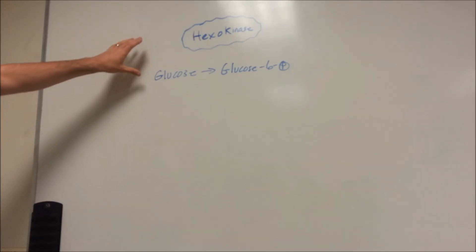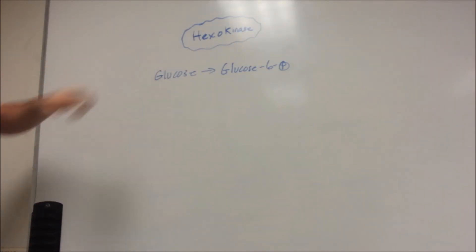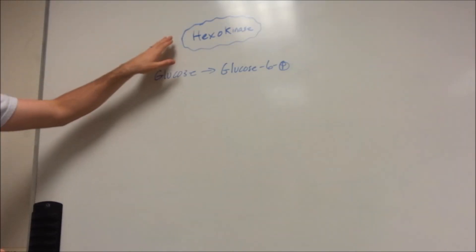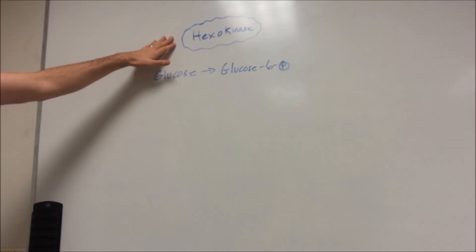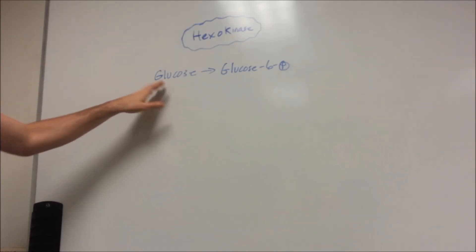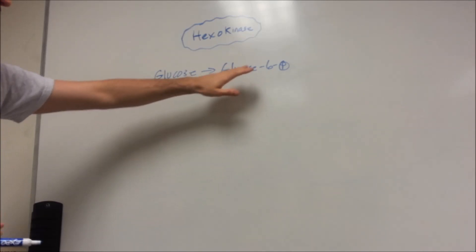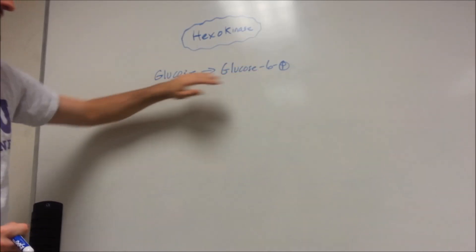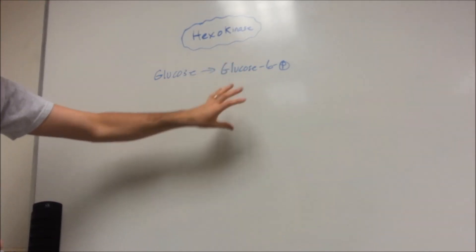As promised in the other video regarding glycolysis, we're going to look at some glycolysis enzymes of note. The first one is hexokinase, the very first enzyme in glycolysis. It's going to trap the glucose that enters the cell in the form of glucose-6-phosphate, so it doesn't leave the cell.